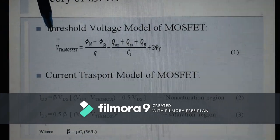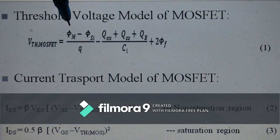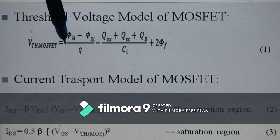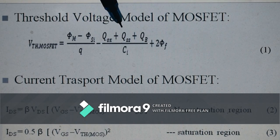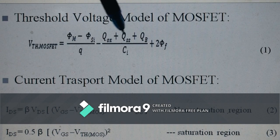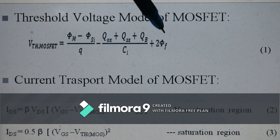Here, V-threshold MOSFET is given by φM minus φSI divided by q, minus QSS plus QOX plus QB divided by CI, plus 2φF. The whole expression is in volts.